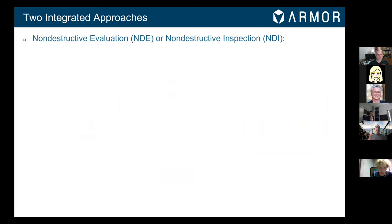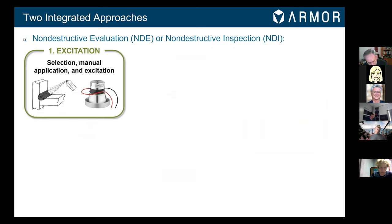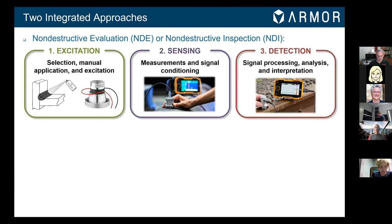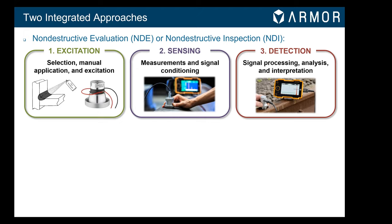When it comes to SHM and NDE, there are two integrated approaches. The first is NDE or NDI — non-destructive evaluation and non-destructive inspection — which typically involves taking the structure offline, using some type of technology to excite the structure and measure its response, such as sending an ultrasonic wave or vibration and listening to how the structure responds. You need instrumentation to acquire and process those signals to detect damage or problems — unsuitable vibrations, a chip in a gear, or a big crack in a railroad track.